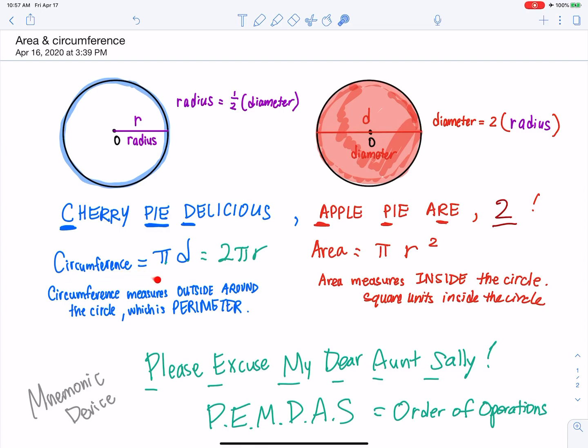So go back to the circumference formula. Pi stays as pi, but two radii make a diameter. Circumference equals pi d or 2 pi r.